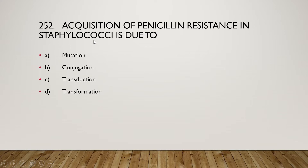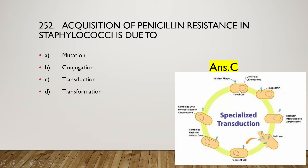The next question is: acquisition of penicillin resistance in staphylococci is due to mutation, conjugation, transduction, or transformation? The right answer is option C, that is transduction. Penicillin resistance comes through the transduction process.